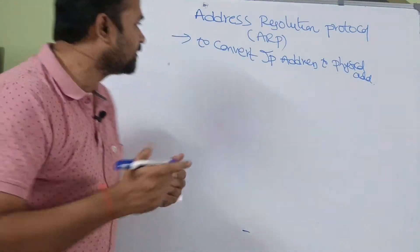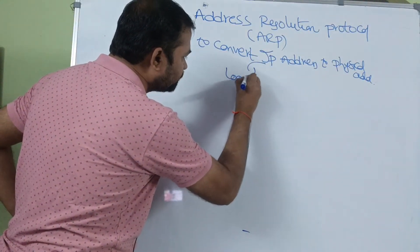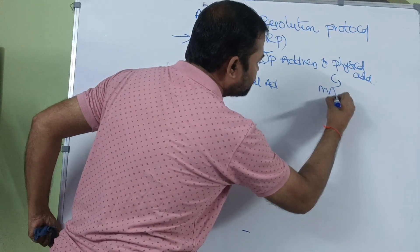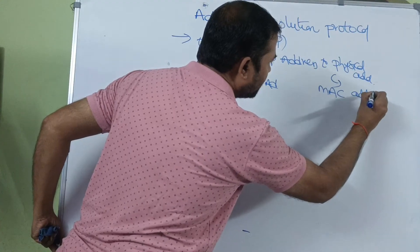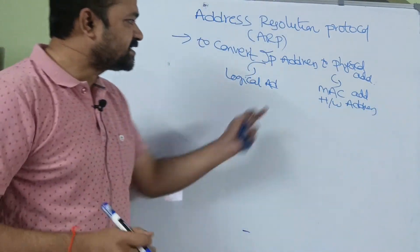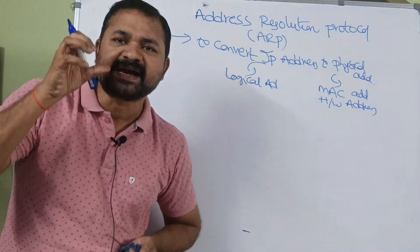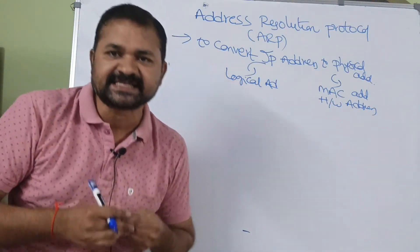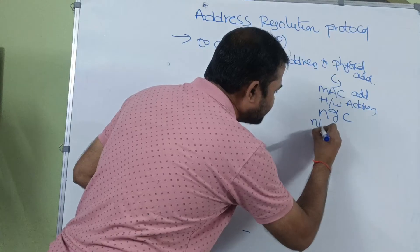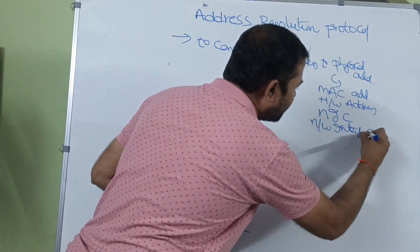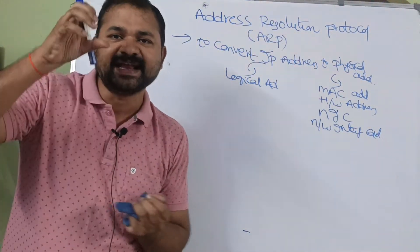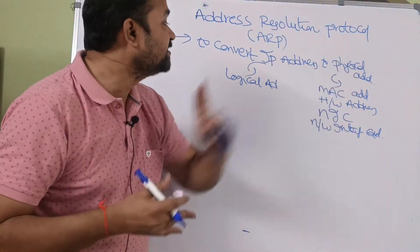Here, an IP address can also be called a logical address, whereas a physical address can also be called a MAC address or hardware address. A MAC address is a unique number assigned to the NIC of every machine. NIC stands for Network Interface Card. Every system has a NIC card, and that NIC card's unique number is nothing but the physical address.